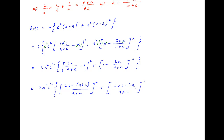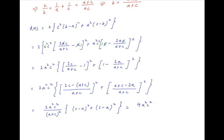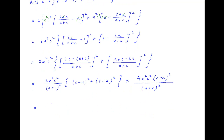This is equal to 2a²c²/(a+c)² times [(c − a)² + (c − a)²], which simplifies. This can be rearranged as 2ac/(a+c) whole squared times (c − a)².